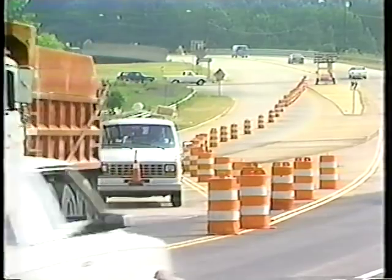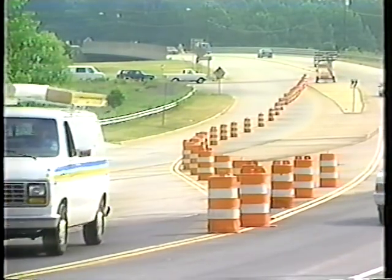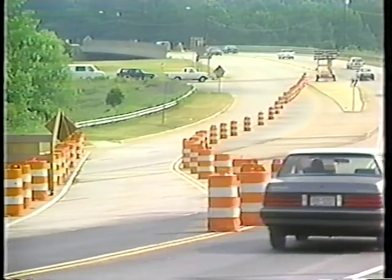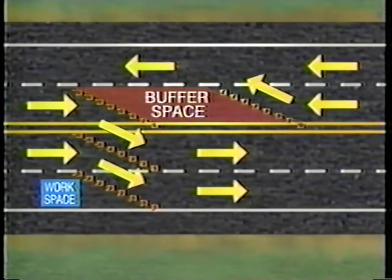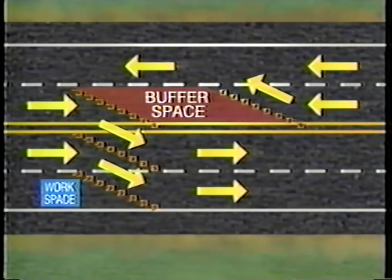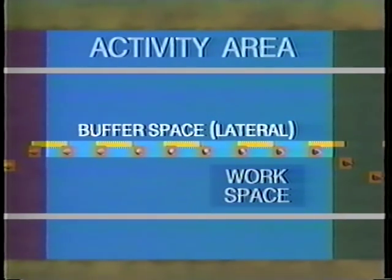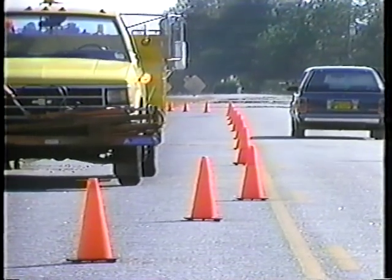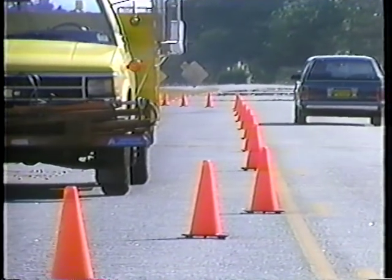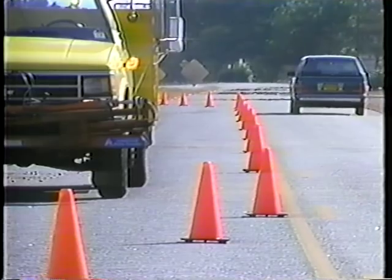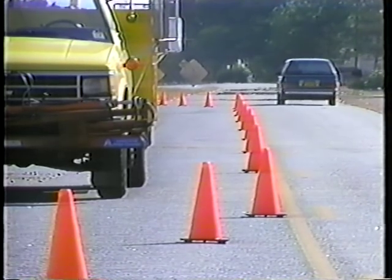Situations occur where one lane of traffic uses a lane that normally flows in the opposite direction. In these situations, a longitudinal buffer space should be used to separate the two tapers for the opposing directions of traffic to help prevent head-on collisions. Lateral buffer spaces separate moving traffic from the work space as well as opposing streams of traffic. The width of this space is determined by engineering judgment and is often governed by the portion of the roadway which is needed to perform the actual work.